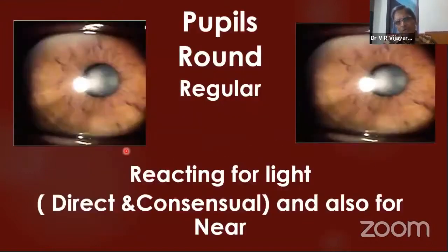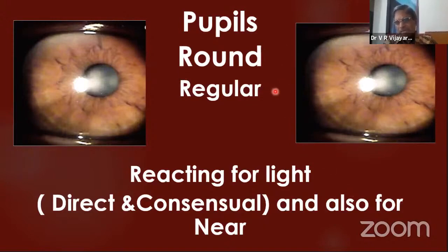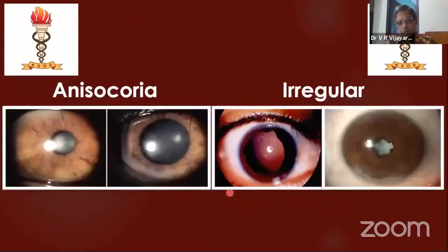When you examine the pupil, you must assess three things: is it round? Is it regular? Is it reacting? These three things — round, regular, reacting — are what you are supposed to look for. Reacting means, as I already told you, reacting for direct, for consensual, and also for near.